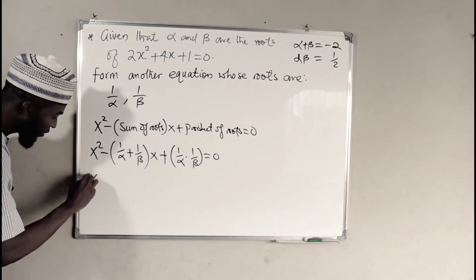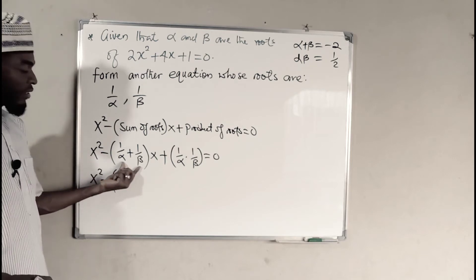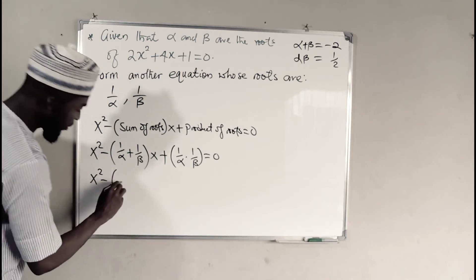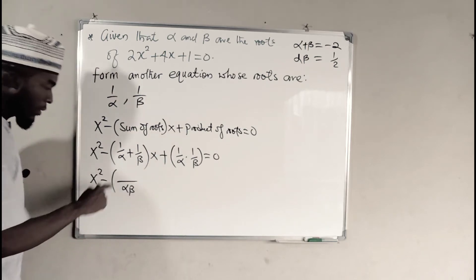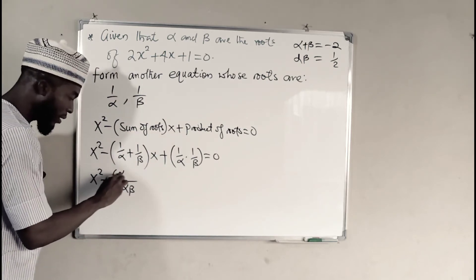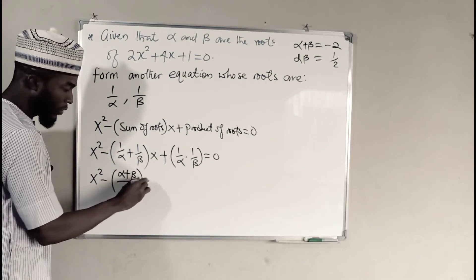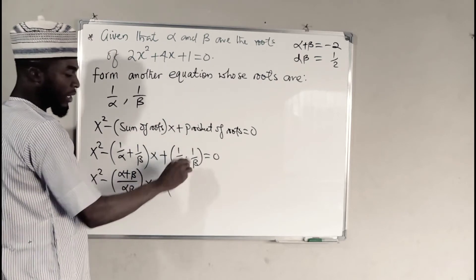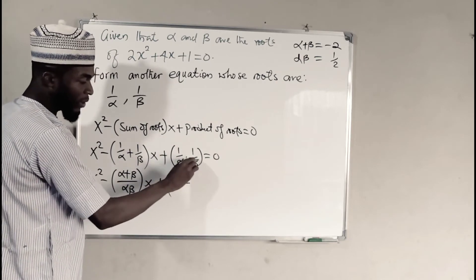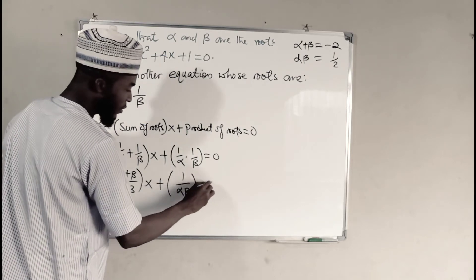Let's simplify. This is x squared minus. If you add these two together, you are going to get the LCM to be alpha beta. Alpha times 1 is alpha. Beta times 1 is beta. All multiplied by x. Plus 1 times 1 is 1. Alpha times beta is alpha beta. The whole of this is equal to 0.